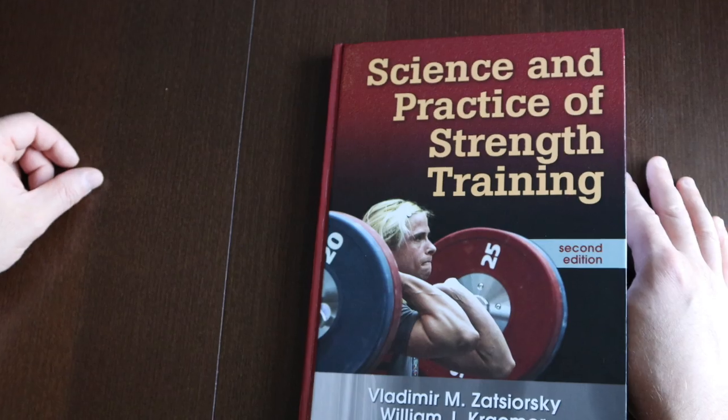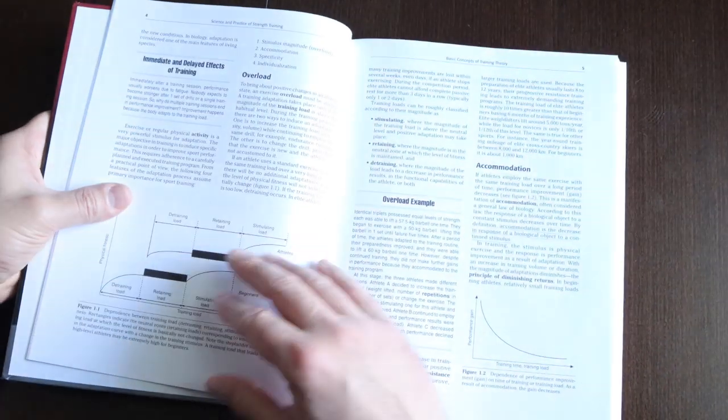So what is Accommodation? Science and practice of strength training states that Accommodation is a decrease in response of a biological object to a continuous stimulus. So now let's dig into it a little more and see what that actually means.